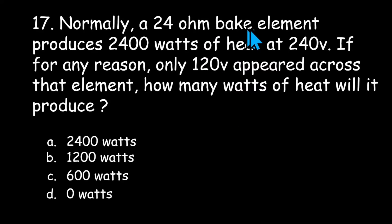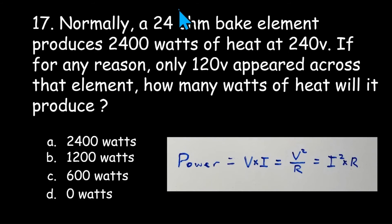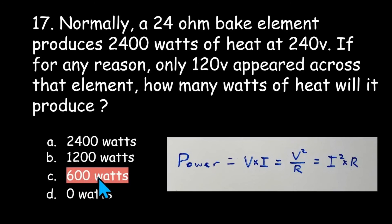Number seventeen: normally a 24 ohm bake element produces 2400 watts at 240 volts. If only 120 volts appeared across that element, how many watts of heat will it produce — 2400, 1200, 600, or zero watts? Again we rely on the power equation P = V²/R. If you reduce the 240 volts in half, it drops by a factor of four — so instead of 2400 watts you'll have 600 watts. A common complaint is the oven is just barely getting hot, which should make you suspect 120 volts across the bake element instead of 240.